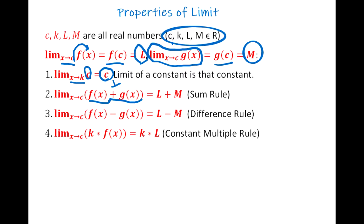If you have two functions with a plus sign between them, the limit equals the sum of each individual limit. If there is a subtraction, the limit equals the difference of both limits. If there is a constant k multiplying f(x), since the limit of f(x) is l, we just multiply k by l to obtain the result.